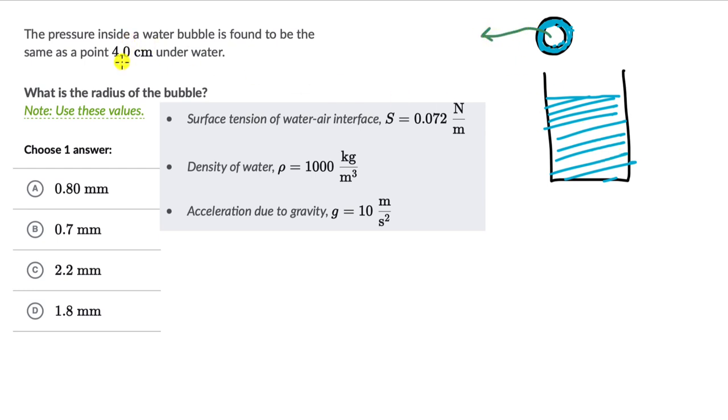it's the same as a 0.4 cm underwater. So a 0.4 cm underwater, let's say this point, this point right here, this is 4 cm. The pressure inside this bubble is the same as the pressure at the 4 cm mark. So let's write that, pressure inside the bubble, let's write pressure bubble. This is equal to the pressure at the 4 cm mark.